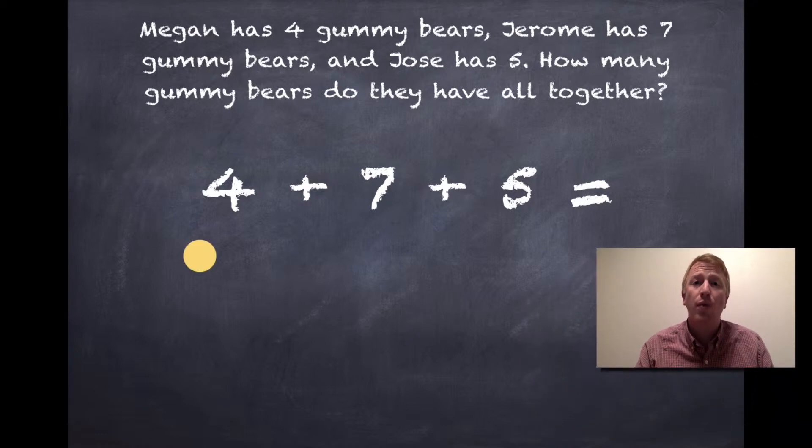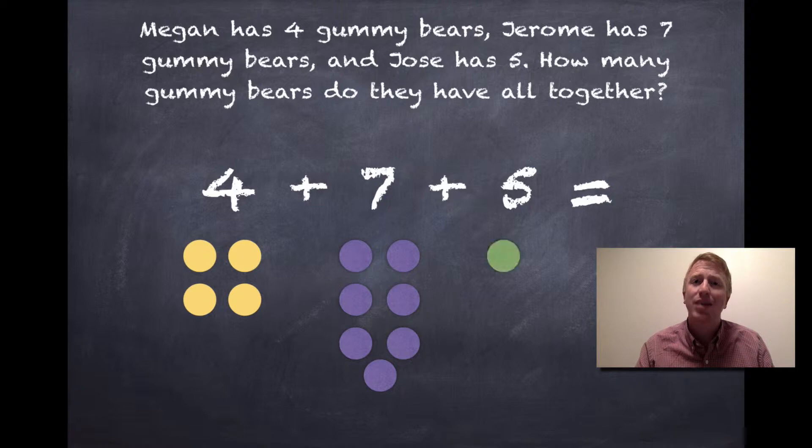I could represent four, just like this, with four counters. I could represent seven, just like this, with seven counters. And I can represent five, just like this, with five counters.